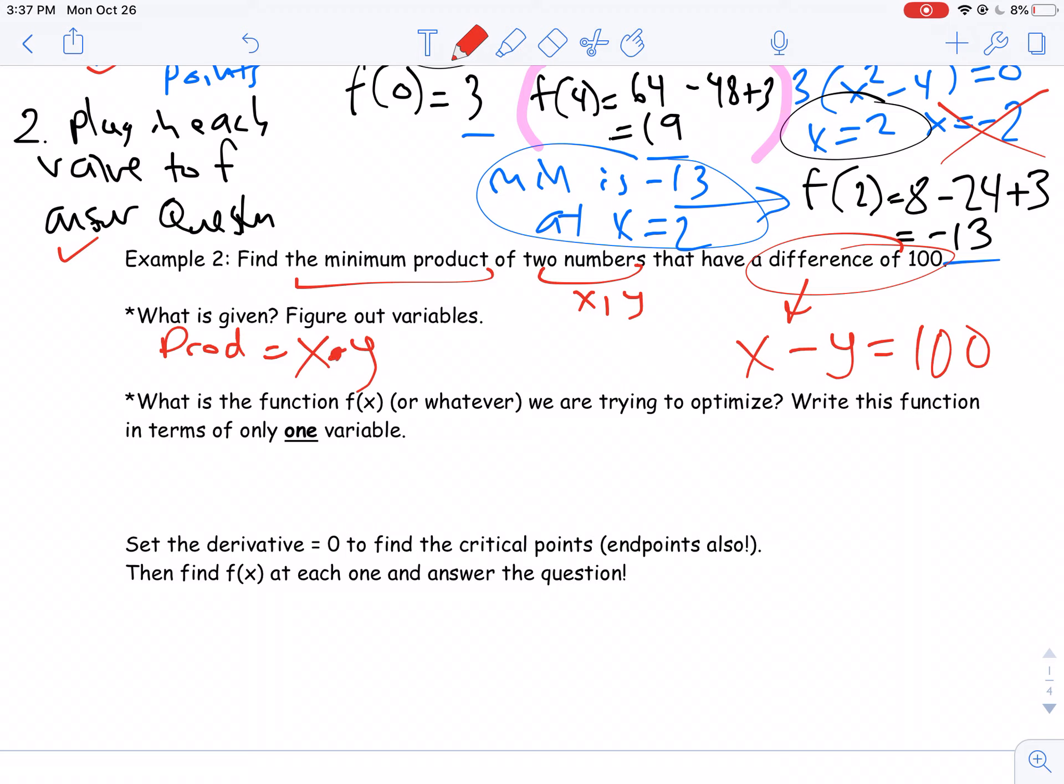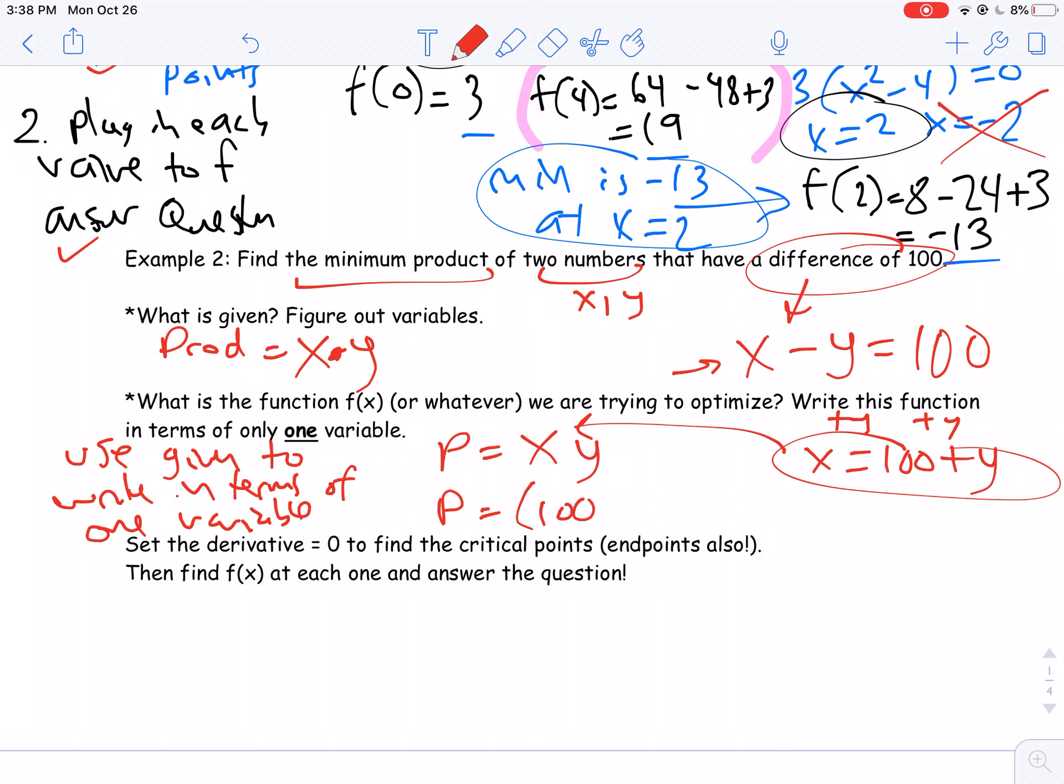So I'm trying to find the minimum product. So the product that I'm trying to minimize is x times y. I'm just calling two numbers x and y. And the problem tells me the two numbers have a difference of 100. So that means that x minus y is equal to 100. Now, when we're taking a derivative, or we're doing an integral, we want it to be in terms of one variable. So I'm going to use this relationship, x minus y equals 100, and solve for x. So x equals 100 plus y. And the reason I'm going to do that is now I can plug that in here and write that my product is 100 plus y times y, also known as 100y plus y squared.